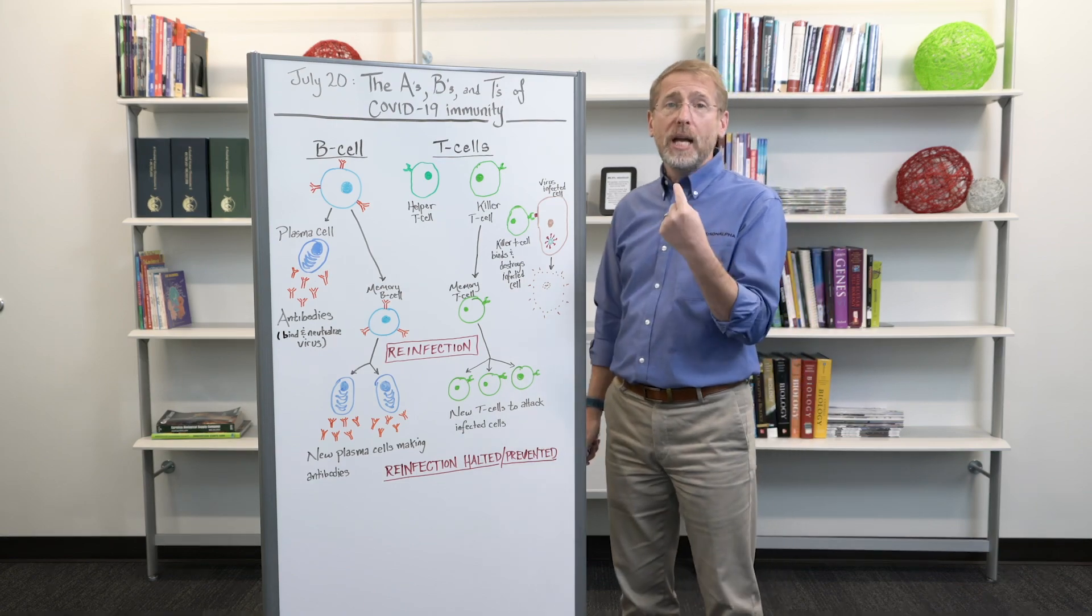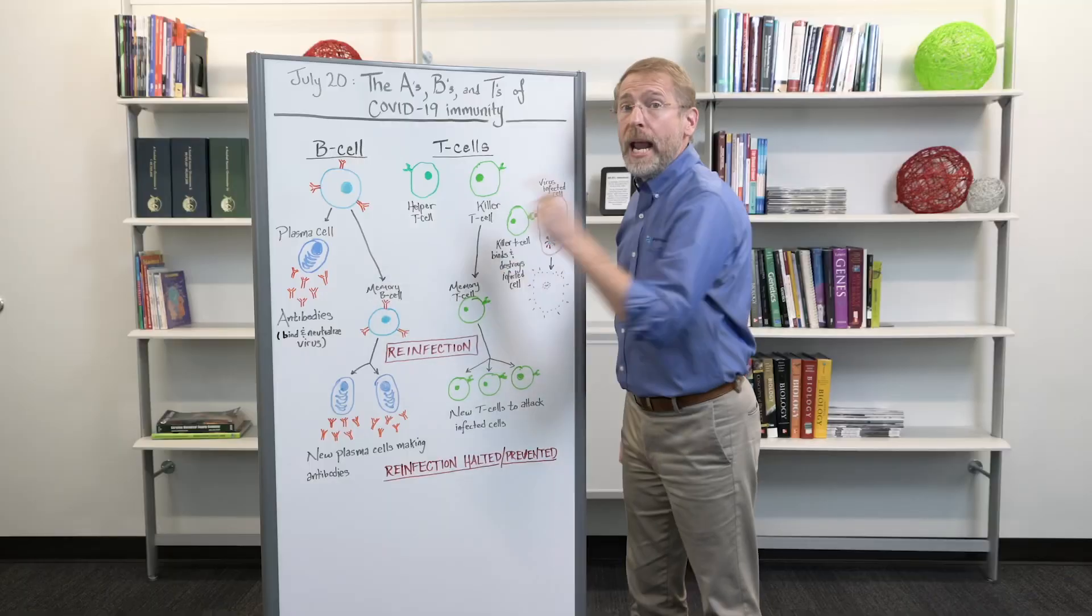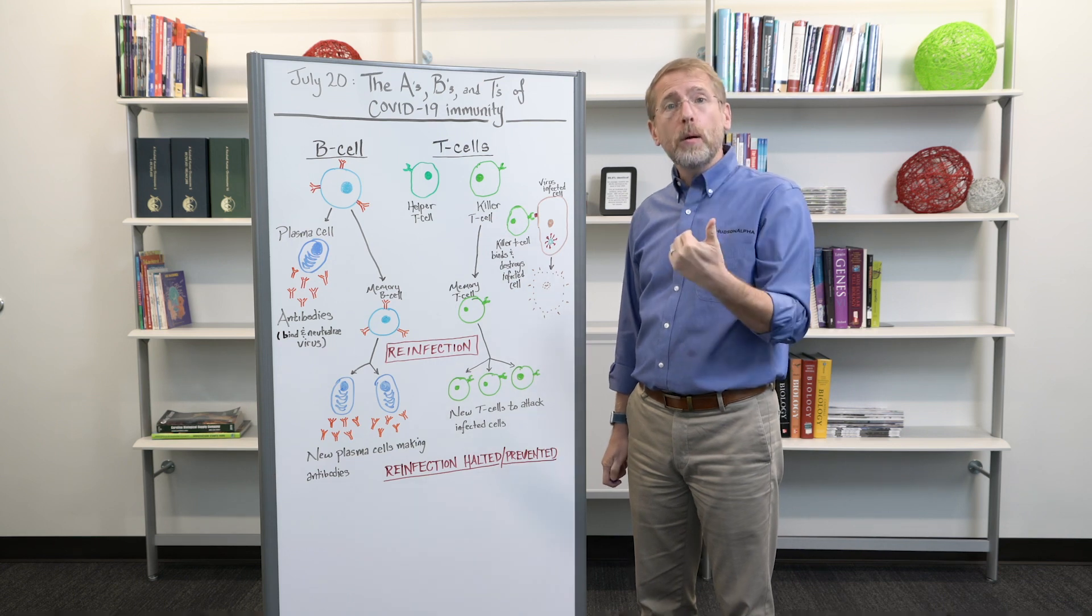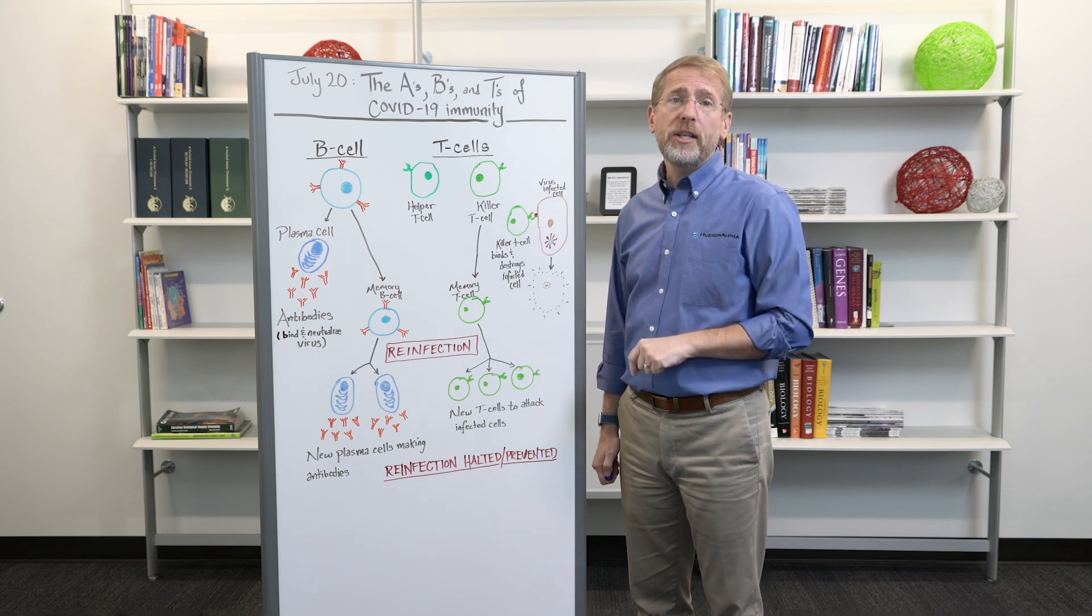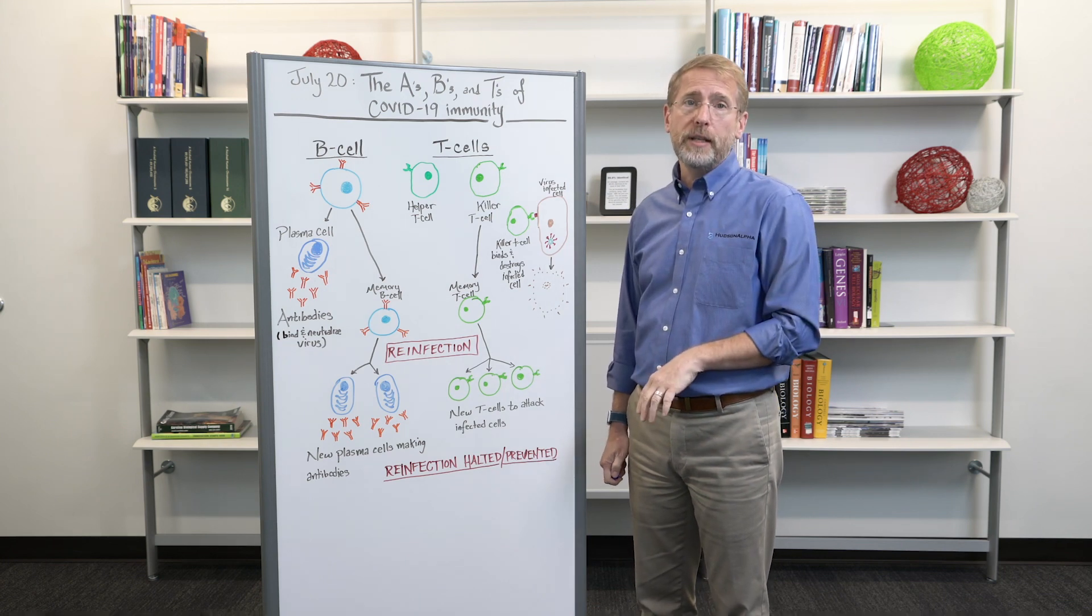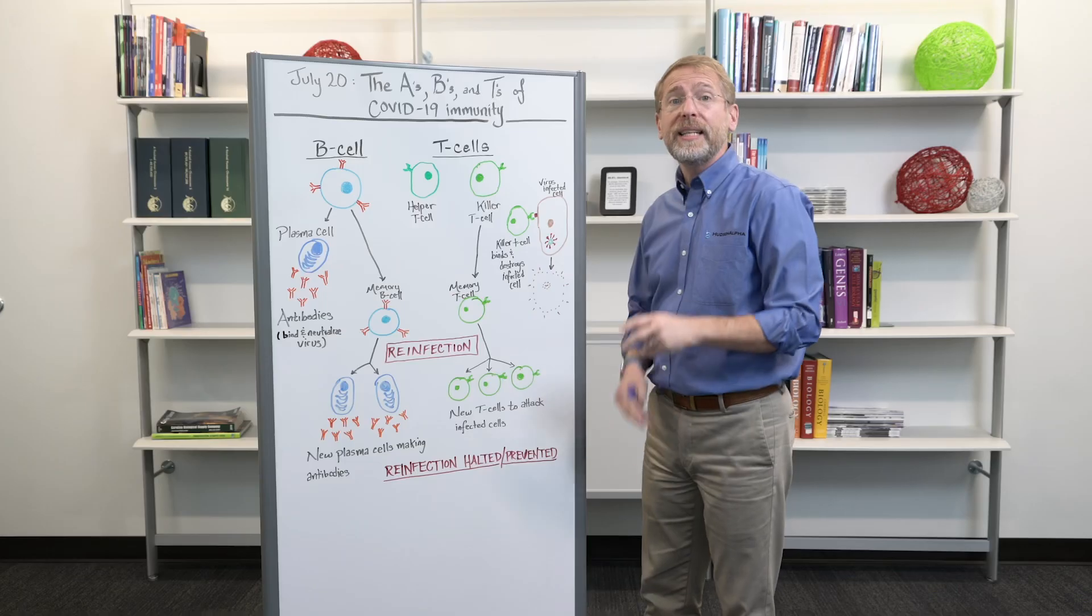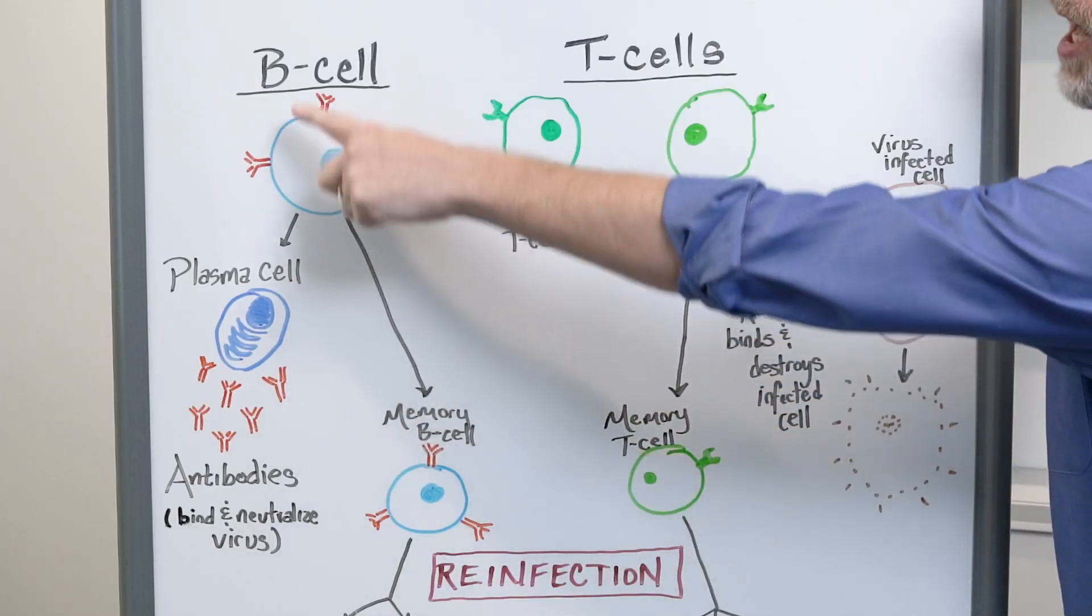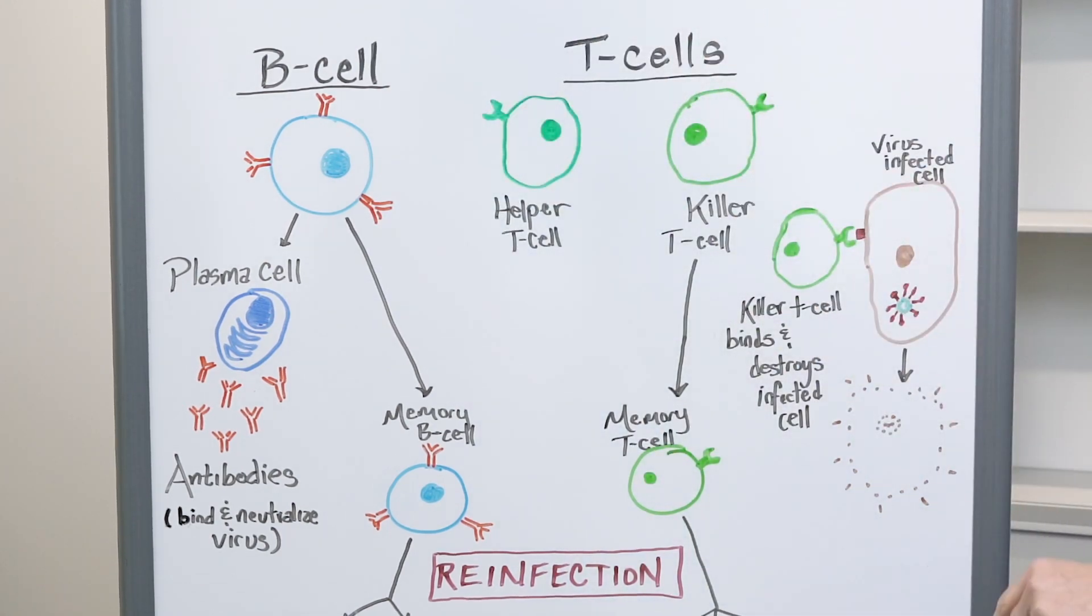We spend a lot of time talking about antibodies. That's our A in the A's, B's, and T's. Antibodies are small molecules that recognize and bind to a foreign invader. We're focused on the antibodies that bind and neutralize the SARS-CoV-2 virus, the virus that causes COVID-19. Those antibodies are produced by a specialized type of cell called a plasma cell. You can think of them as antibody factories. And plasma cells are a subgroup of a broader category of immune cells called B cells. There are multiple different types of B cells. The plasma cells are what we're most focused on.